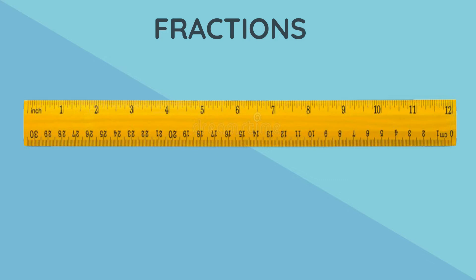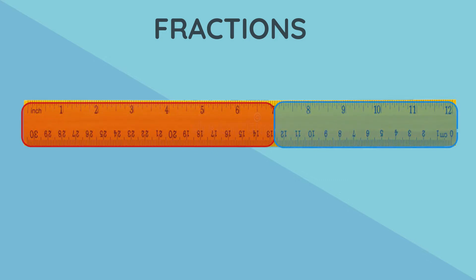Now that we know what a fraction is, can you help me answer the following question? If a ruler is divided into 12 equal parts and seven of those parts are red and five are blue, what area of the ruler is blue?